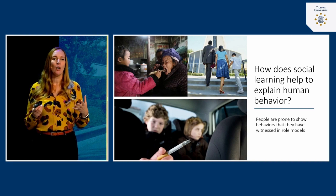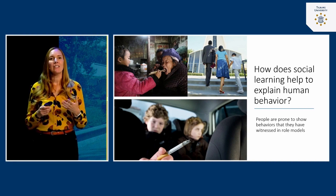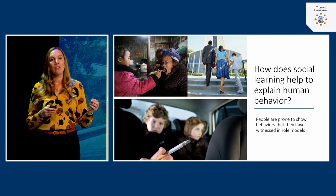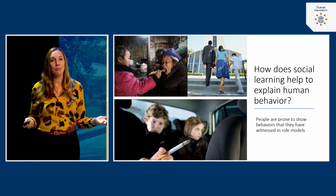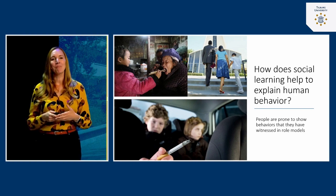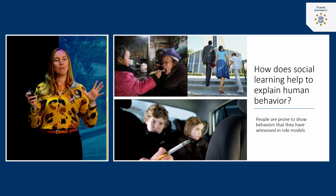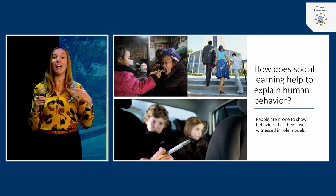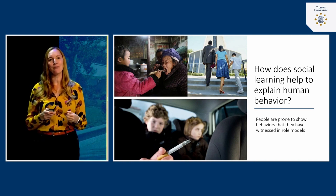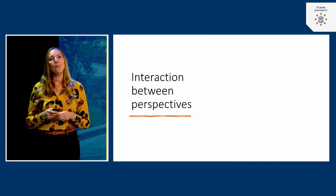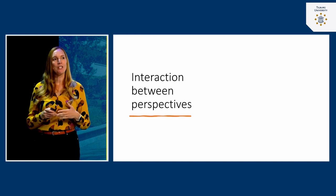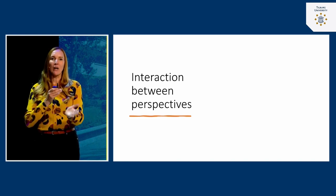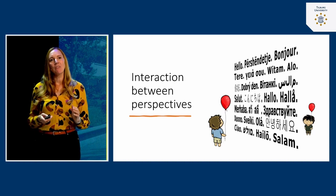The core idea of the social learning perspective is that people are prone to show behaviors they have earlier witnessed in role models — mostly parents, but also teachers, grandparents, or a neighbor you spent a lot of time with. We have these three different perspectives in social psychology, and there's always an interaction between them. Let's consider language as an example.